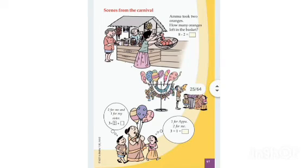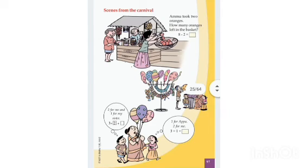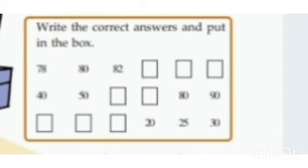Next, you can see some balloons hanging and a balloon man. One kid is saying 'Two for me and one for my sister.' The mother is holding three balloons. If she gives two balloons to him, the remaining is one — so 3 minus 2 equals 1. The girl is also thinking: one for Apu and two for me, that is 3 equals 2 plus 1.